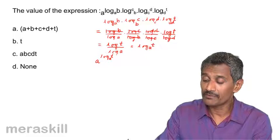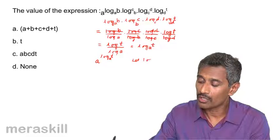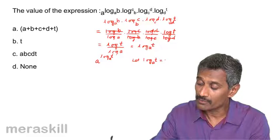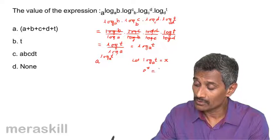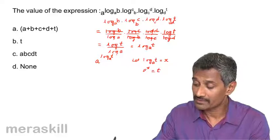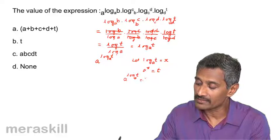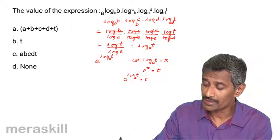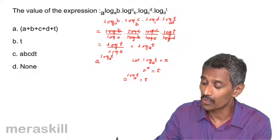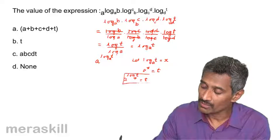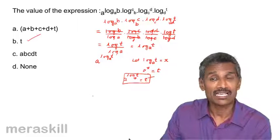Now we simplify a raised to log_a(t). Let log_a(t) = x. That means a raised to x equals t. So a raised to log_a(t) is simply t itself. Hence a raised to x equals t, meaning a raised to log_a(t) equals t.